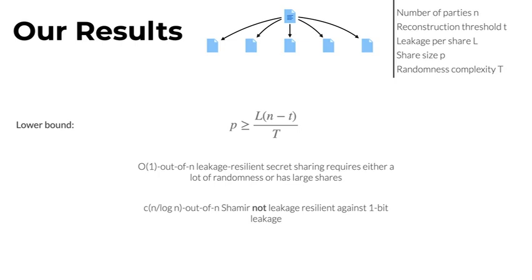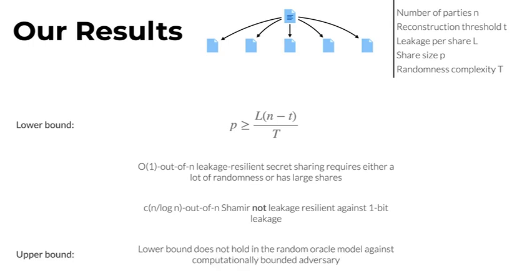Using our lower bound, we show that for a reconstruction threshold of c times N divided by log N, Shamir's secret sharing is not one-bit leakage resilient. This tells us that the conjecture postulated by Ben Amuda et al. is the best we could possibly hope for. In addition, we present an upper bound showing that in the random oracle model against a computationally bounded adversary this lower bound does not hold — our lower bound is for information-theoretically secure schemes and also holds in the random oracle model against computationally unbounded adversaries. By bounding the adversary's random oracle queries, we can construct more efficient leakage resilient secret sharing schemes.